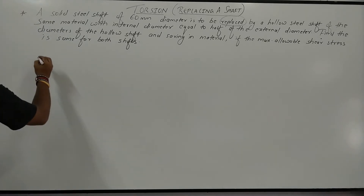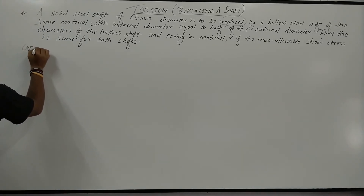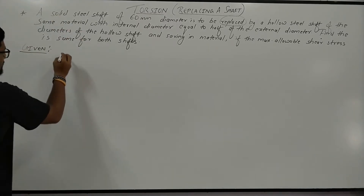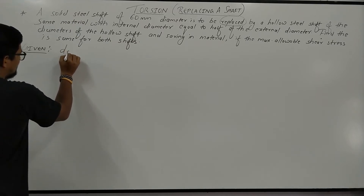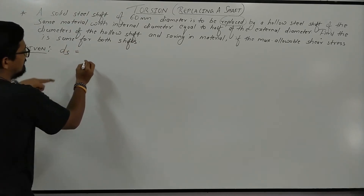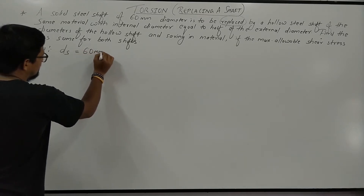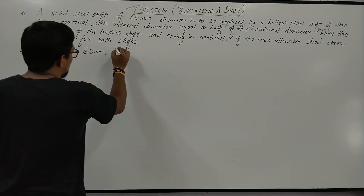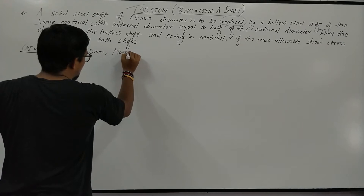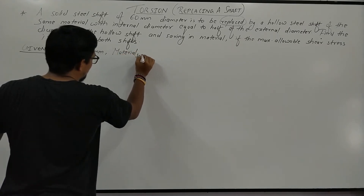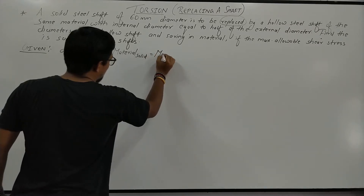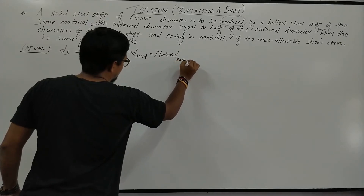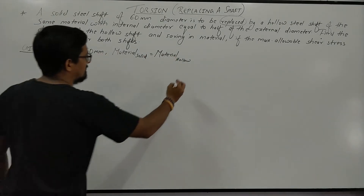Let us write all the given data. For the solid steel shaft, the diameter ds = 60 mm. The material for the solid shaft is equal to the material for the hollow shaft.